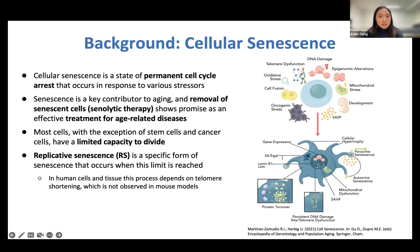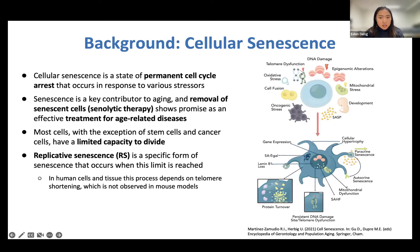One reason we chose to focus on replicative senescence, as opposed to other forms of senescence, has to do with an interesting difference between mouse models and humans. RS specifically occurs by different mechanisms in murine cells compared to human cells. In humans, it's pretty much directly caused by telomere shortening. But in mice, including their much longer telomeres, RS seems to be induced by oxidative stress and other environmental factors. By studying RS in human cells, we hoped to capture senescence targets that maybe aren't as well known from mouse models.